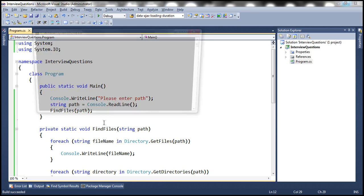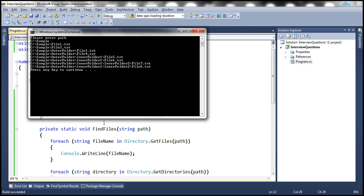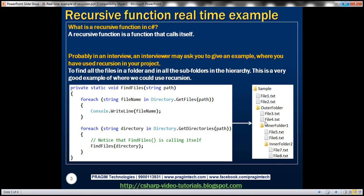So let's go ahead and run this. So let's enter the path C colon backslash sample. That's where we have the folder. And look at that. I get all the files. File 1, 2, 3, 4 till 8. And that's what is the structure.